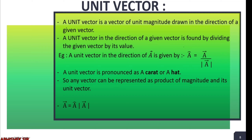If we want to represent a single vector, we just do cross multiplication of the unit vector with the magnitude of that vector. So vector A is also written as A-hat multiplied by the magnitude of A. That is the unit vector — the original vector divided by its magnitude.